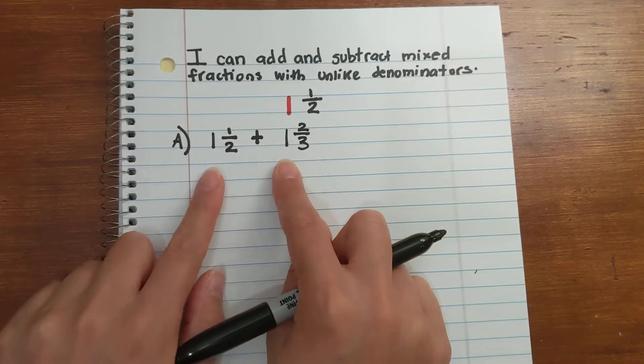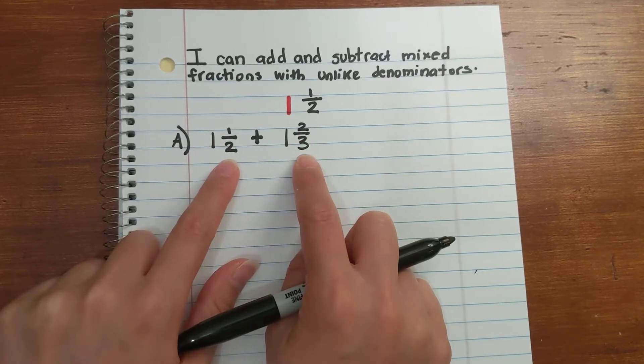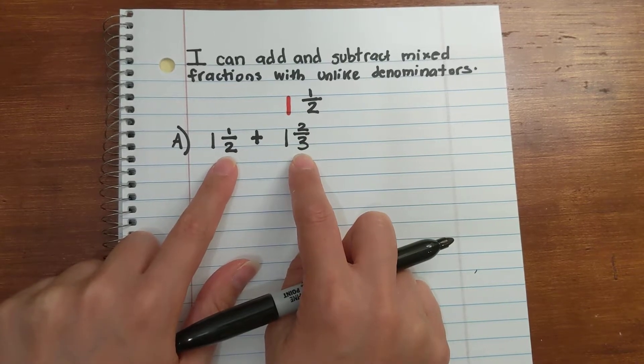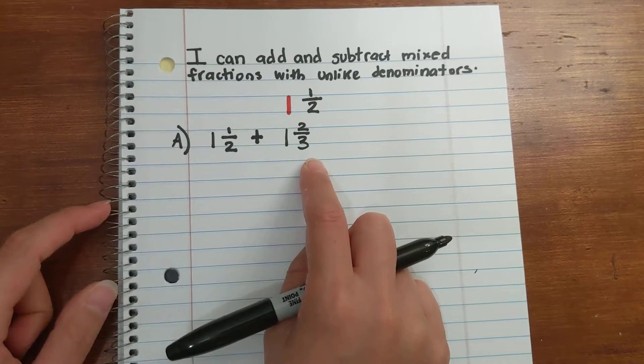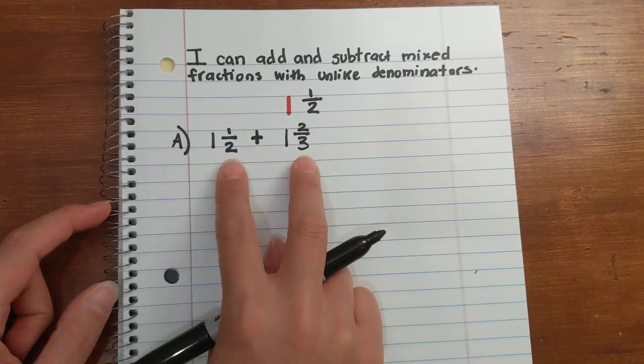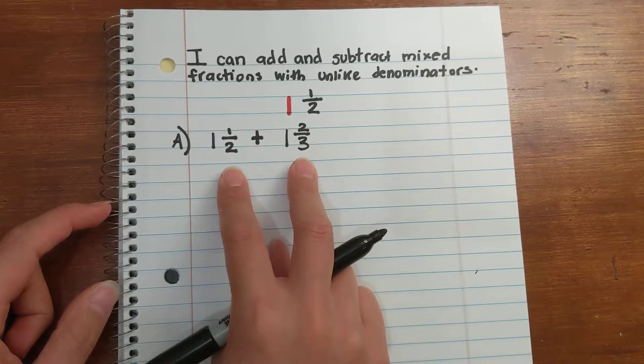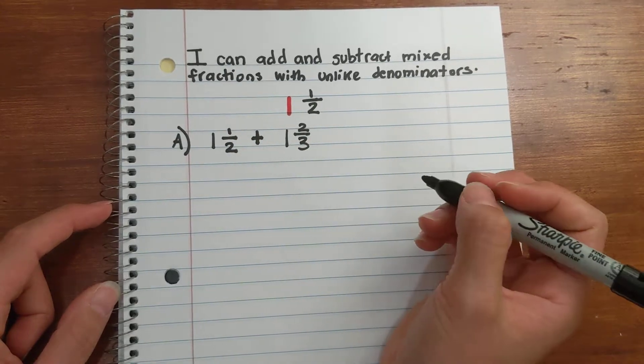Whenever I see two mixed fractions or fractions with unlike denominators - that number below the bar - we have to figure out a common denominator between the two. And I know by my multiples: 2, 4, 6, and 3, 6. So 6 is going to be my lowest common denominator, my least common denominator.